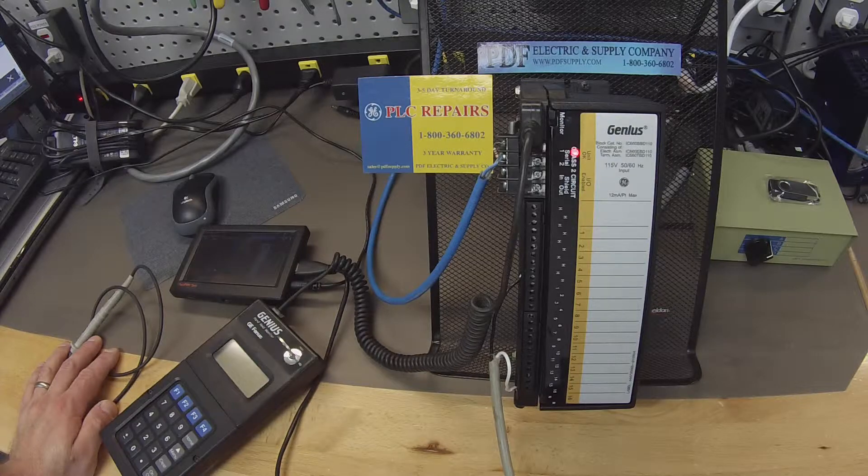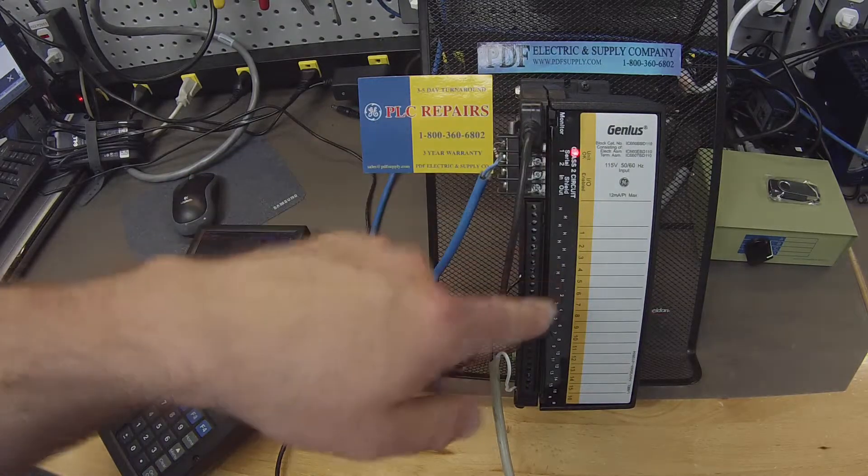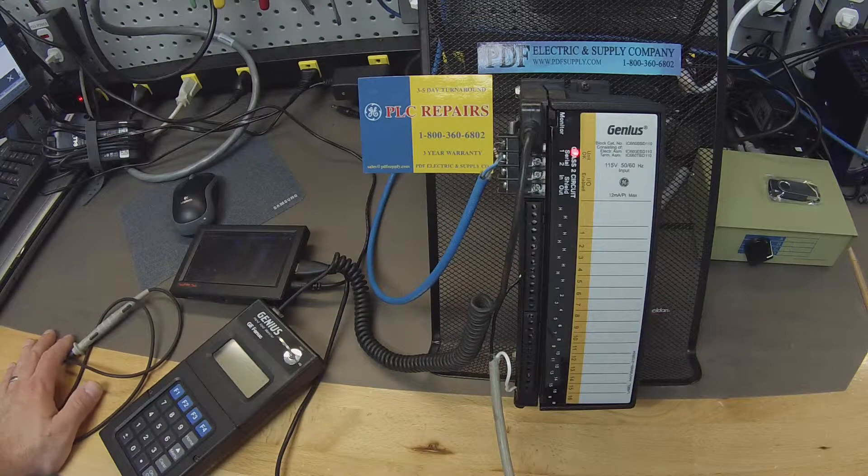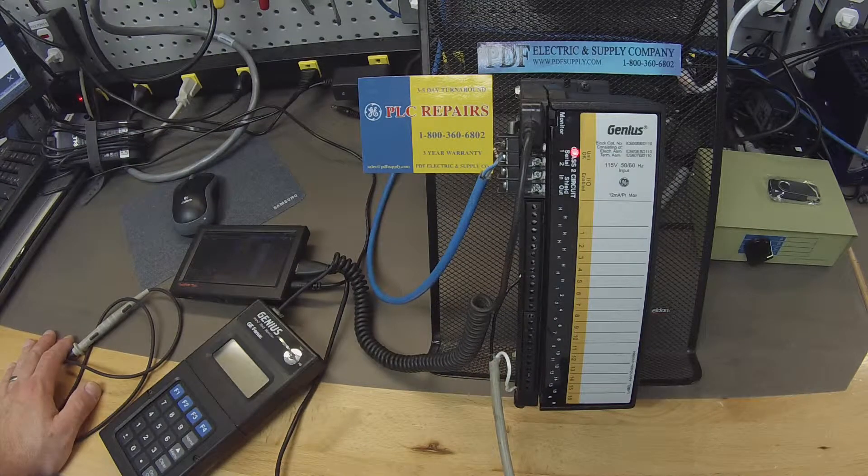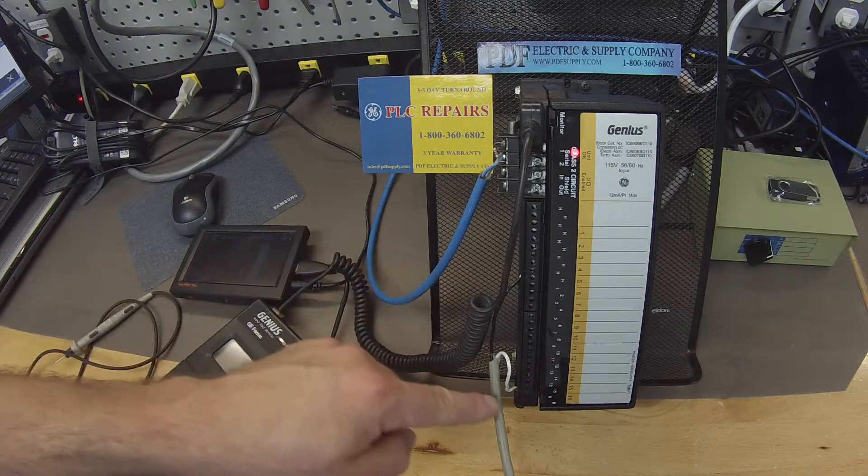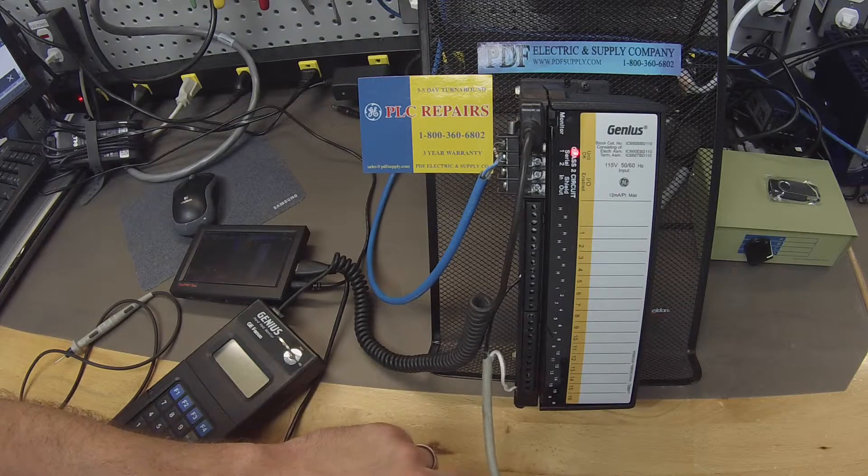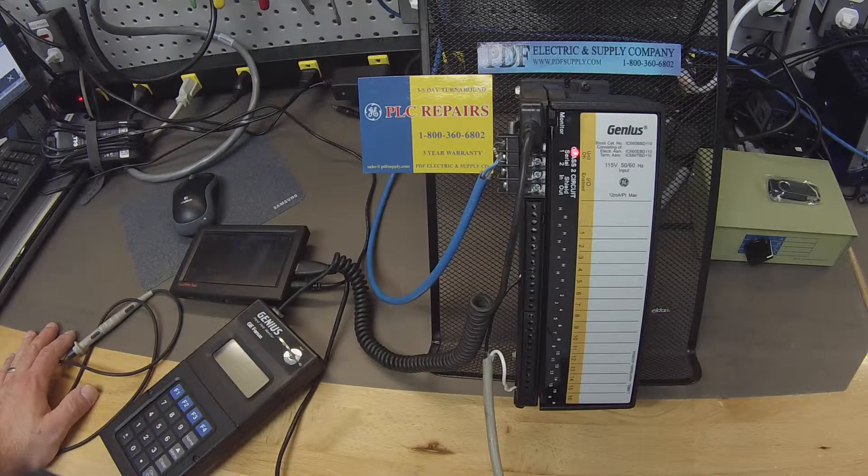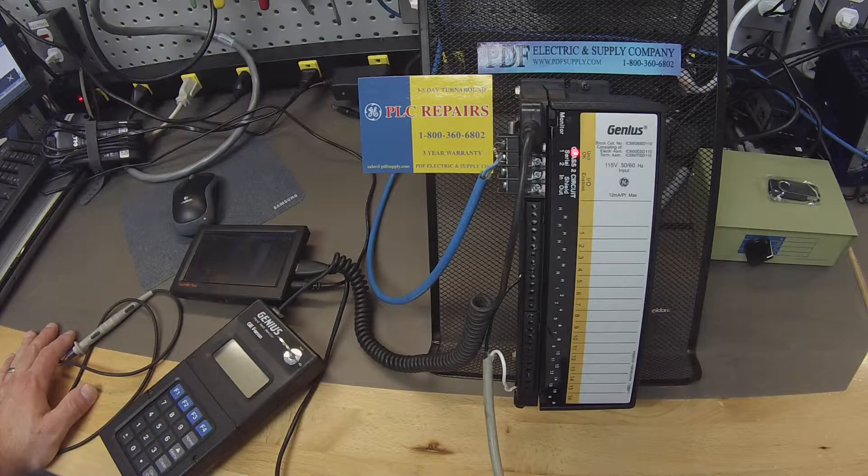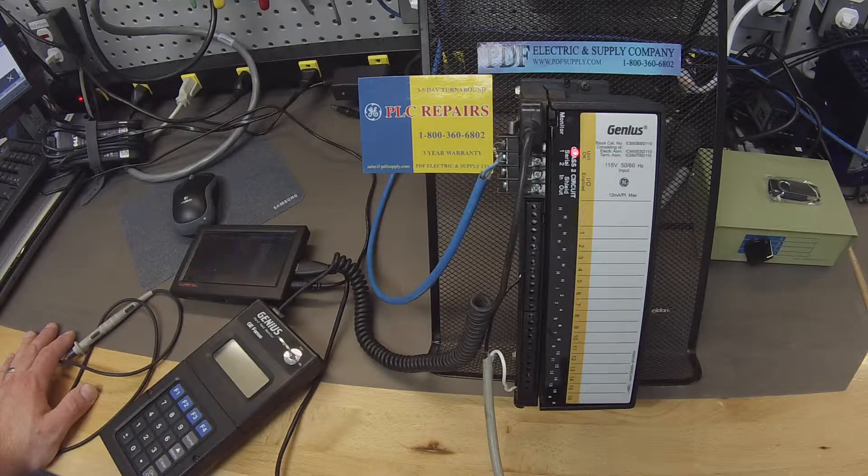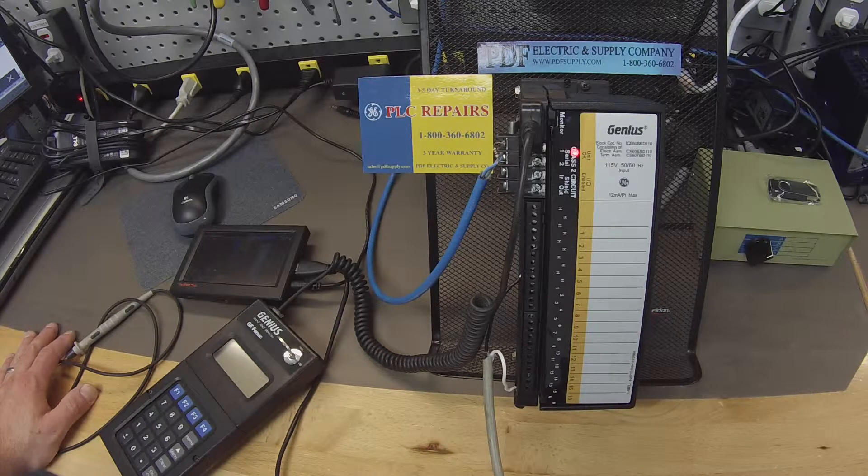The first thing that you can see in front of you is we have the block powered up and I have a solid red light. If for some reason you guys power up the block in the appropriate areas with 115 volt AC power input and you don't get a light then that obviously means that there's something catastrophically wrong with the block and it would likely need repair or replacement.